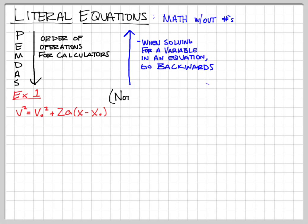That little zero means it's the initial value. So this equation says: final velocity squared equals initial velocity squared plus two times the acceleration times the quantity final position minus initial position. Those are the quantities that go with each of those variables.